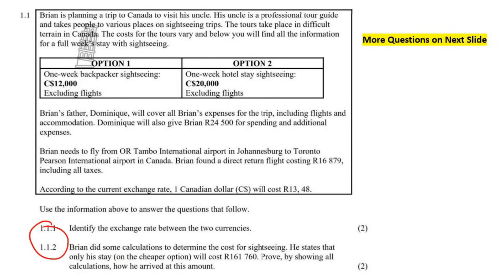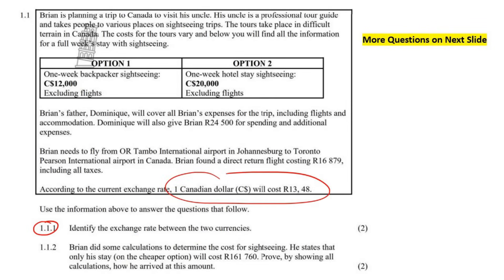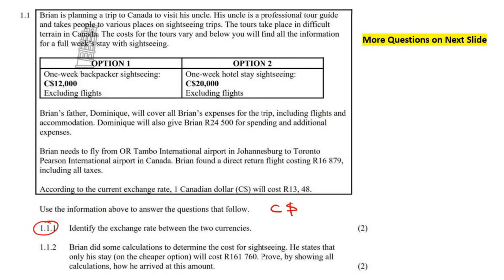The first question says: identify the exchange rate between the two currencies. We can just take the value from the table and write it as: one Canadian dollar equals 13 Rand 48. That's the exchange rate.